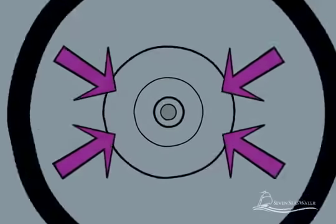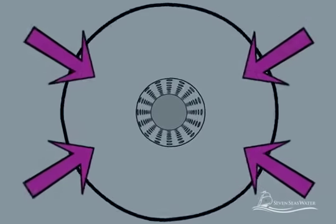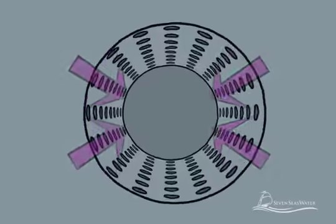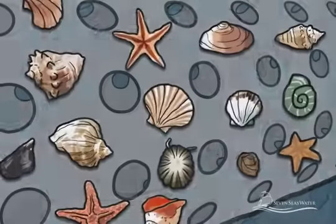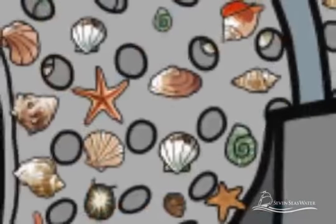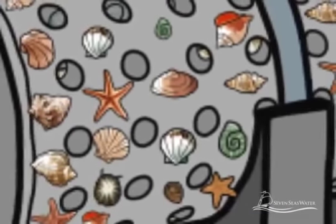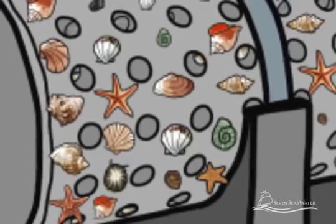The concentrated salt stream is sent back to the ocean through a brine disposal well or a device known as a brine outfall. The brine outfall is situated in an area of significant ocean flow so that the salt levels are quickly returned to equilibrium with the ocean.